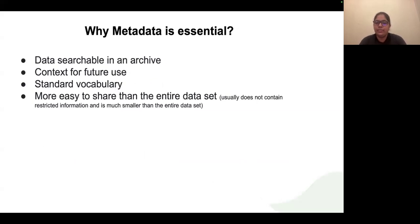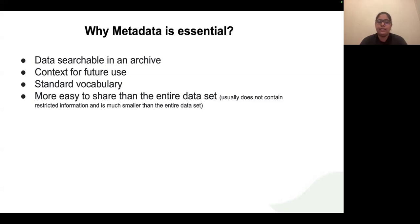Why is metadata useful or essential? Like in the library example, when you know the title, author, and subject, it is easy to find a particular book among many. Similarly, if you know the metadata, you can search for the corresponding data in an archive. Another advantage is that metadata is generally easy to share because it is not as large as the original datasets, but still contains information to identify where the data is or what it is about.